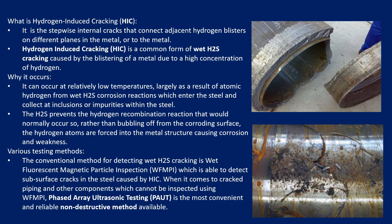First of all, let us understand what is hydrogen induced cracking. It is defined as stepwise internal cracks that connect adjacent hydrogen blisters on different planes in the material. If you look at these pictures, these are examples of hydrogen induced cracking. It is generally a form of wet hydrogen sulfide cracking caused by blistering of metals due to high concentration of hydrogen.